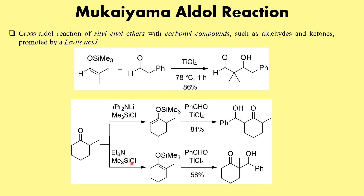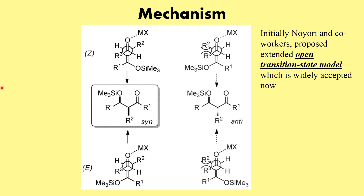If we use triethylamine as a base, a thermodynamically controlled enolate is formed; when this enolate is treated with TMS chloride, we get the respective silyl enol ether. So by controlling the base we use, we can also control the regioselectivity and hence control the product that is formed. Depending on the base, the regioselectivity varies — this is a very important point to be mindful of.